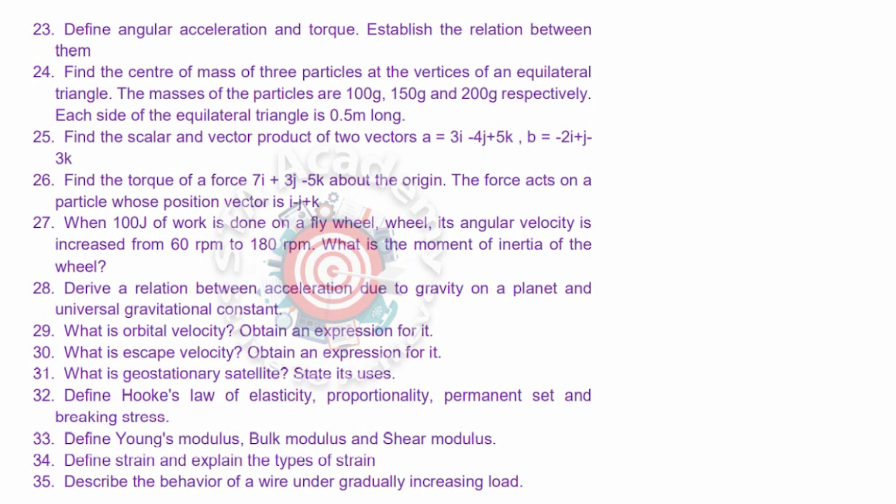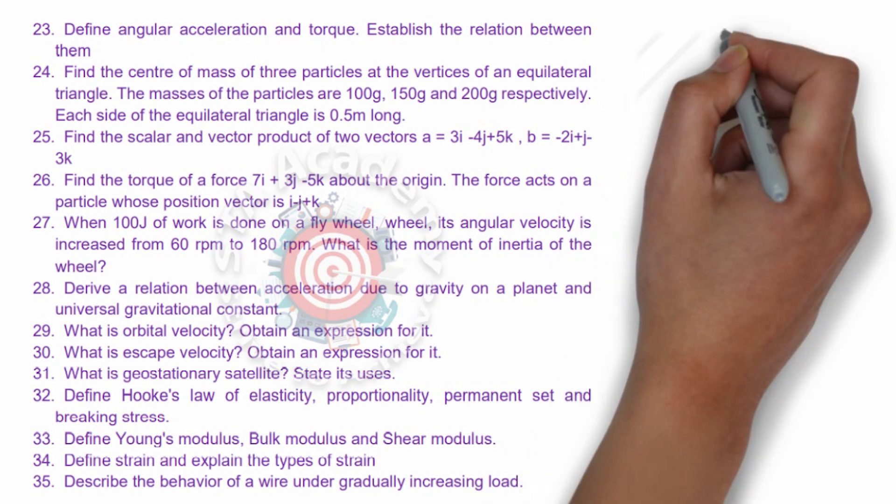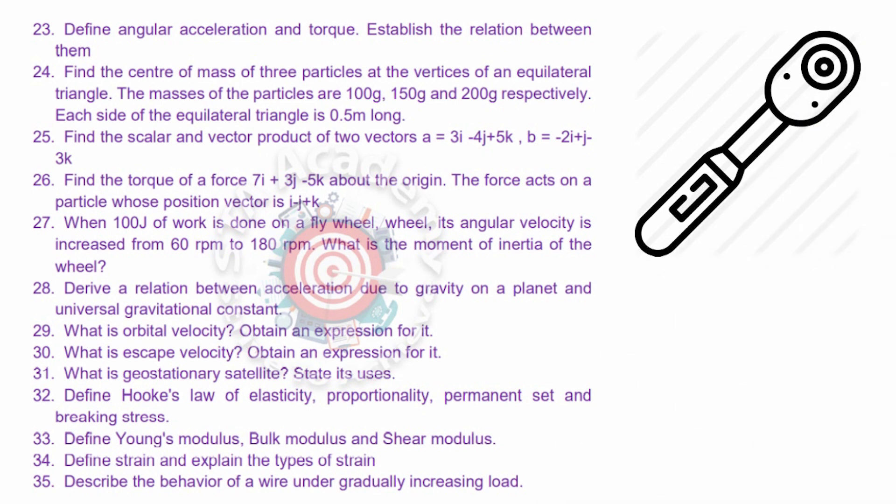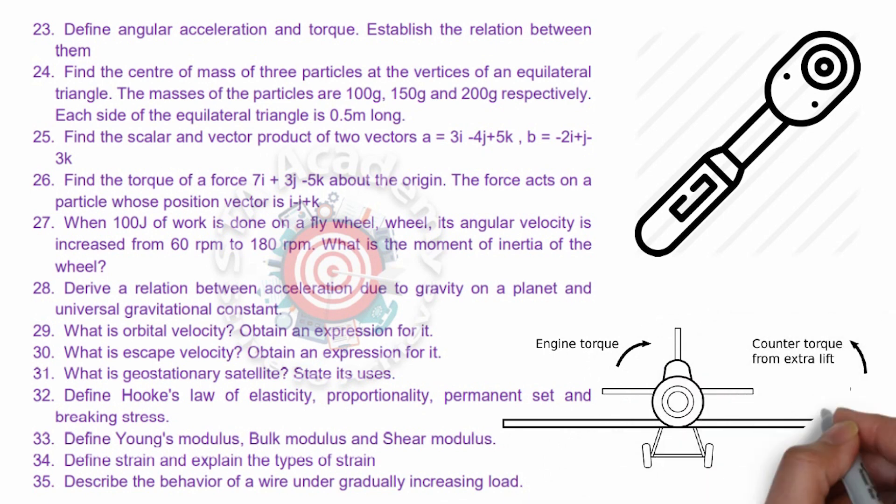Twenty-eight: relation between acceleration due to gravity on the planet and universal gravitational constant. Twenty-nine: orbital velocity. Thirty is escape velocity. Thirty-one is geostationary satellite. Thirty-second: define Hooke's law of elasticity. Thirty-three is Young's modulus. Thirty-four is strain, explain the types of strain. Thirty-five is a very important problem, very important question, definitely it will give you four marks in the IPE exam. Describe the behavior of a wire under gradually increasing load.